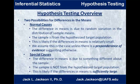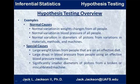When we have special causes, the difference in means is due to something different about the sample — the sample is not from the hypothesized target population — and it's likely that this is the case if there is a sufficiently large difference in the means. Terms like 'preponderance of evidence' and 'sufficiently large' are kind of vague — we're going to quantify those a little bit later. Let's first look at some examples of normal and special causes.